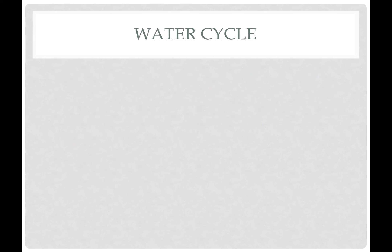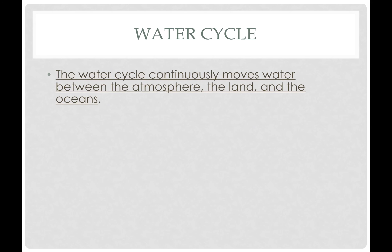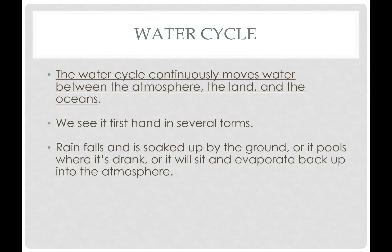So let's start with the water cycle. The water cycle functions to continuously move water from the atmosphere — the sky — to the land, to the oceans, and back again. We see the water cycle when we see rain falling. We're getting to summertime where we have a lot of those thunderstorms. The water gets soaked in by the ground where either organisms will consume it or it will evaporate and go back up into the atmosphere.